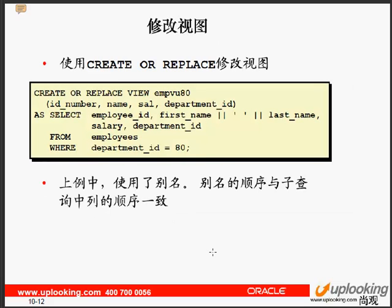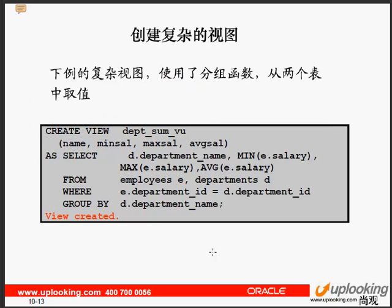视图的创建比较简单：CREATE VIEW 视图名字 加上一个查询语句，视图当作表一样用。视图的一些信息可以在我们的 DBA_VIEWS 里面找到，可以找到视图的定义。视图的修改通过 CREATE OR REPLACE 来实现，把里面的查询语句改成新的查询语句。